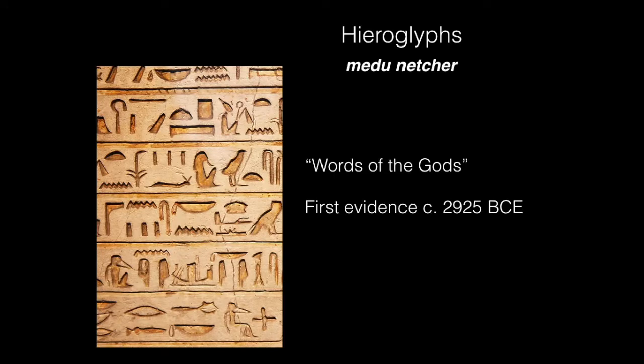To begin with, the word hieroglyph is not the word that the ancient Egyptians used themselves for this written language of theirs. They actually called it Medunech. Why do we almost never hear the word Medunech? Hieroglyph is actually the Greek word that they used to describe what these were.